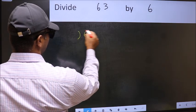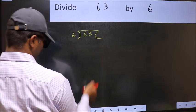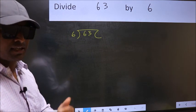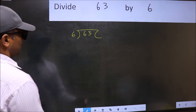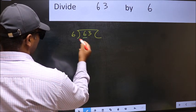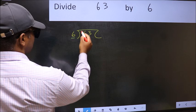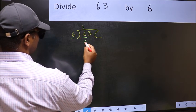63, 6 here. This is your step 1. Next, here we have 6 and here also 6. When do we get 6 in 6 table? 6 ones, 6.